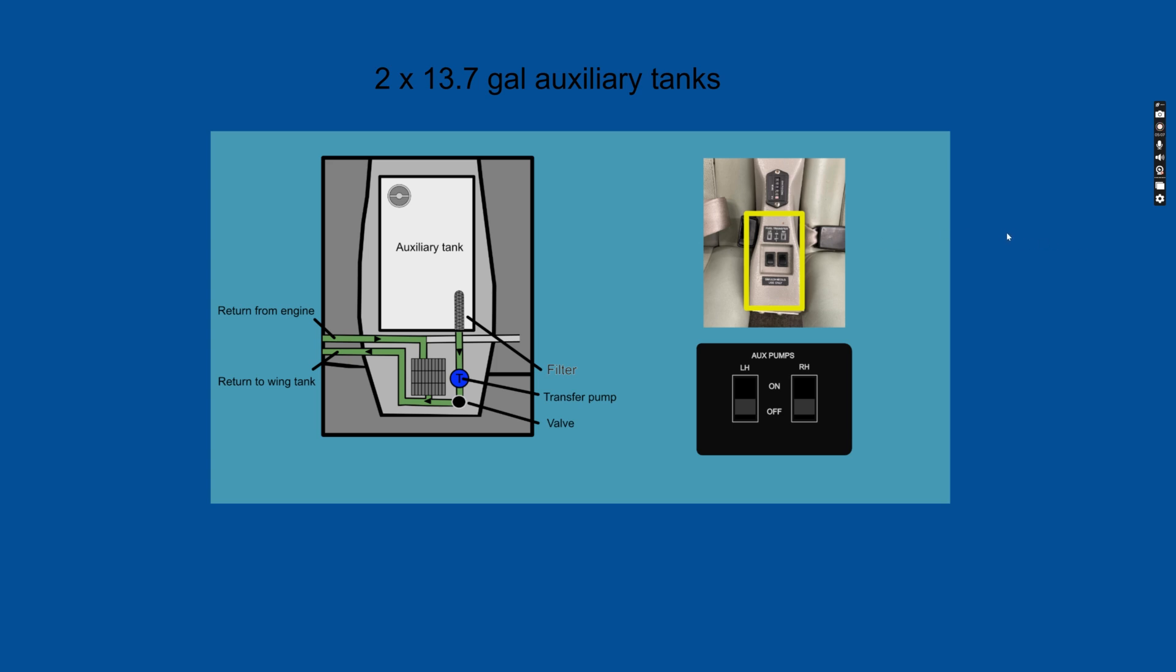There are also these auxiliary tanks in each engine nacelle, 13.7 gallons each. There is no fuel quantity readout for the aux tanks.